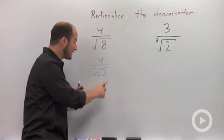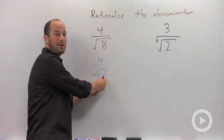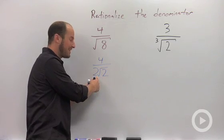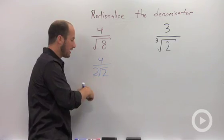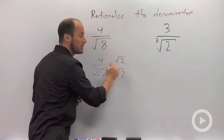People often want to multiply by the entire denominator. You don't have to do that. The root 2 is the only thing creating the problem. So you can leave the 2 right there as it is. So in order to rationalize the denominator, multiply by root 2 over root 2.